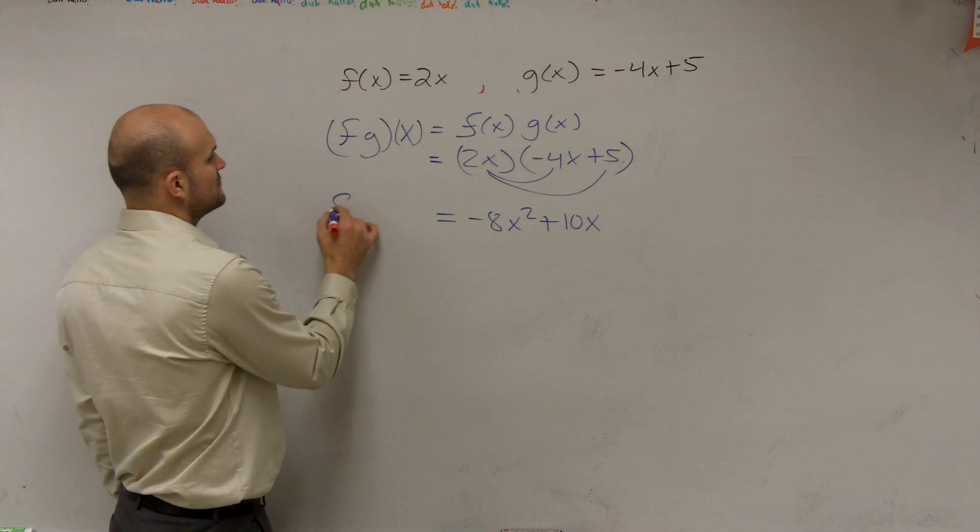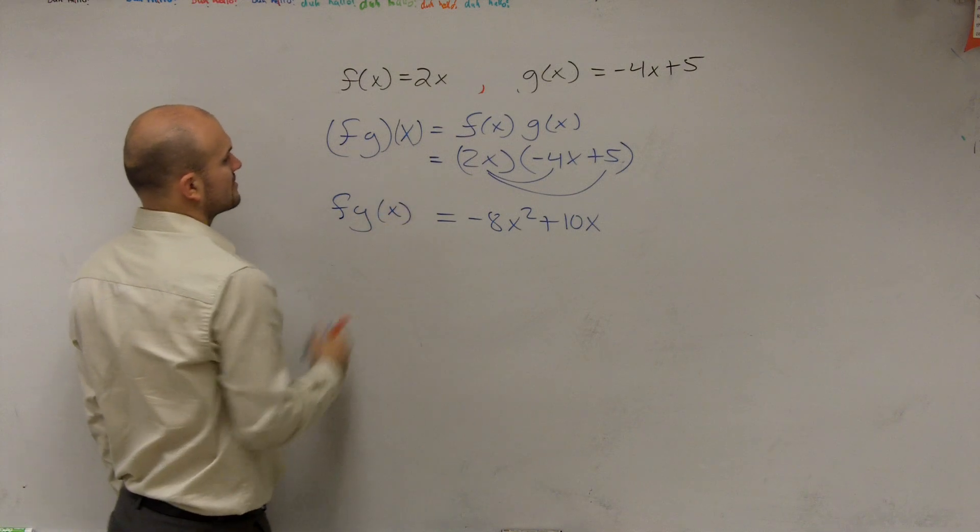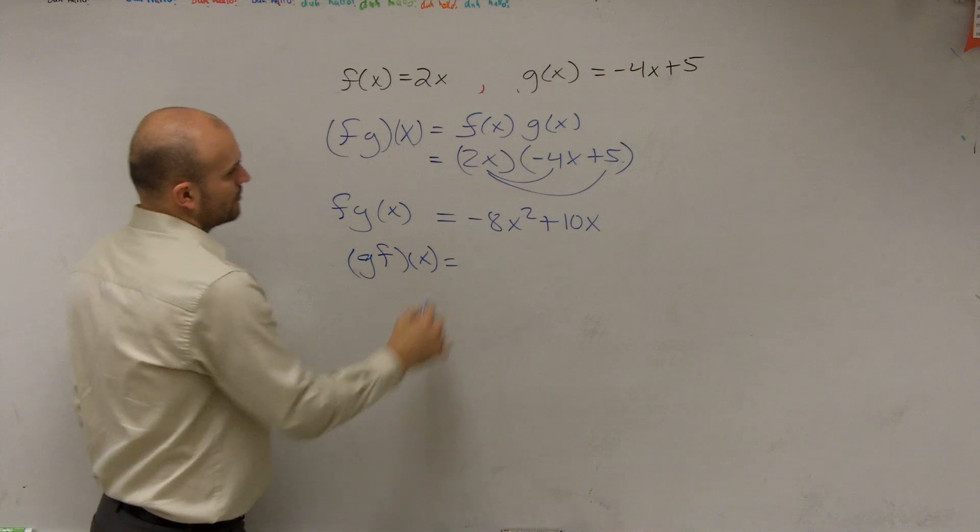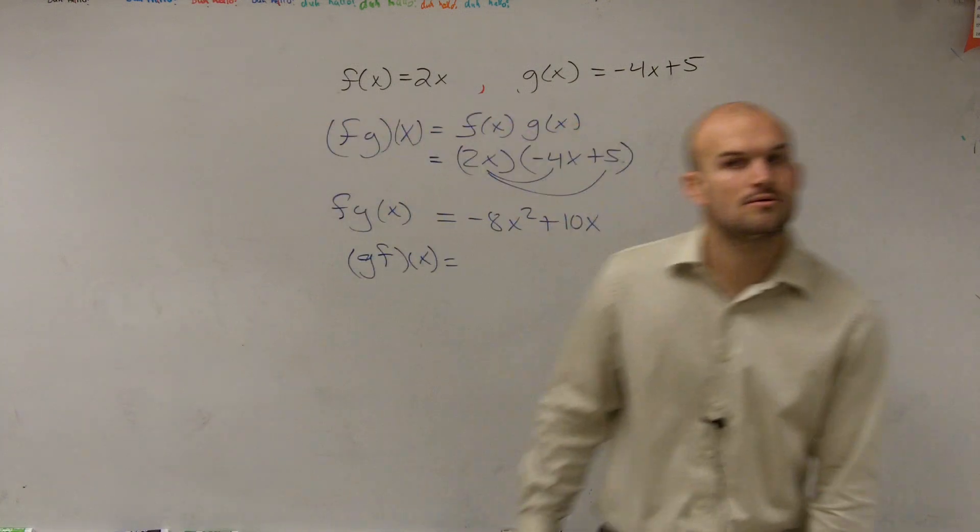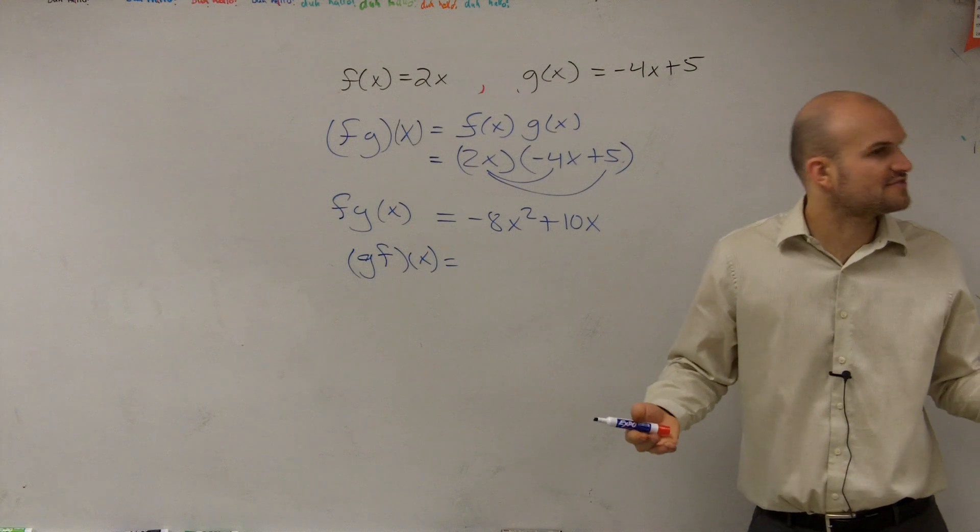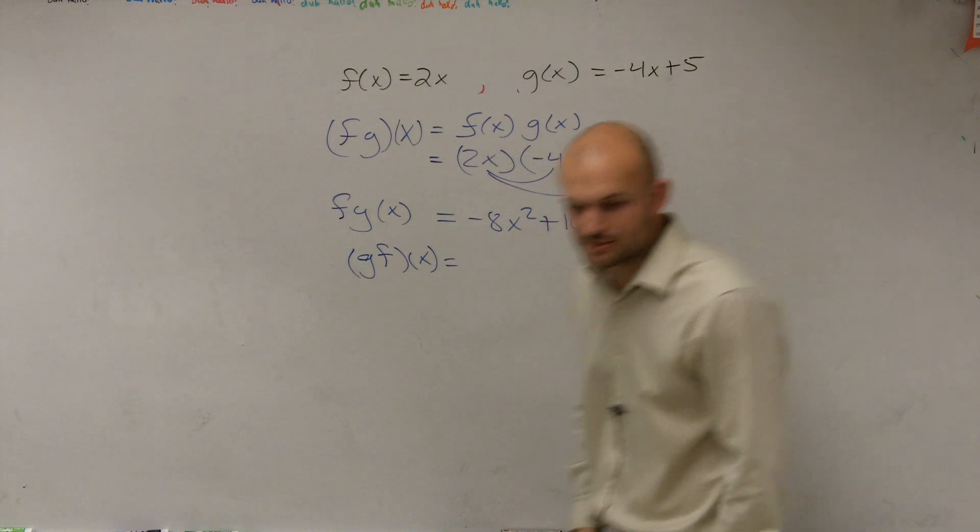And so we could say f of g of x. Now here's the question. If I were to do g of f of x, would I have the same answer or a different answer? Yeah, the same, right? Because 3 times 4 is the same as 4 times 3, so it's not going to matter. So that would be the same answer as well. Just wanted to throw that out there, because what we're going to do next is a little bit different.